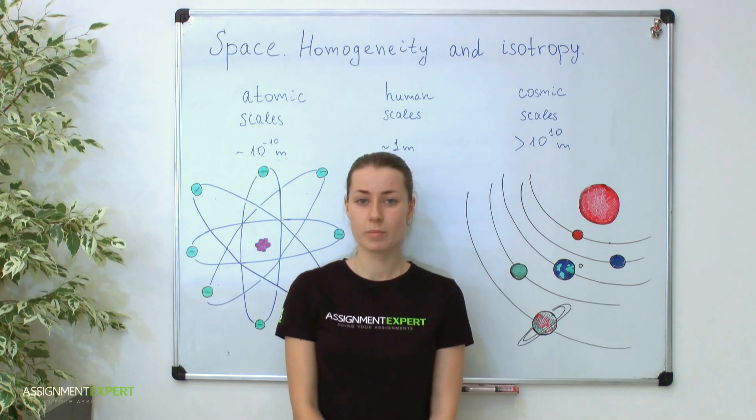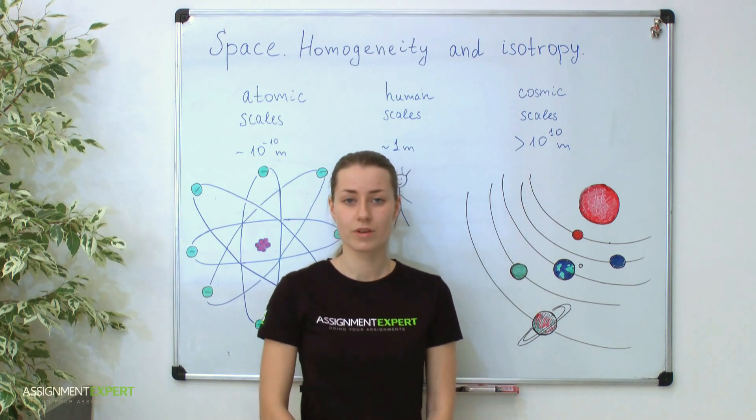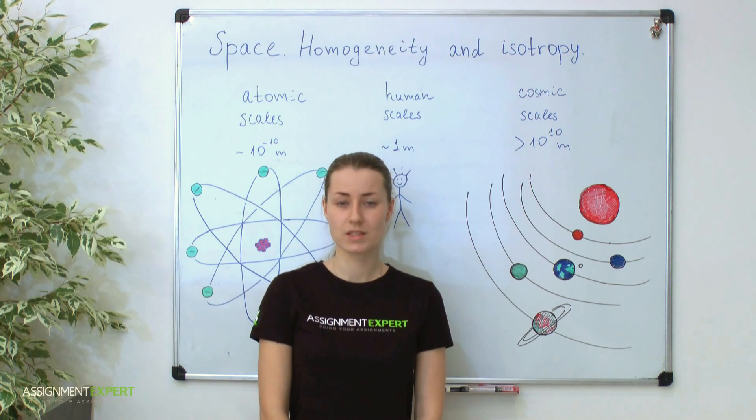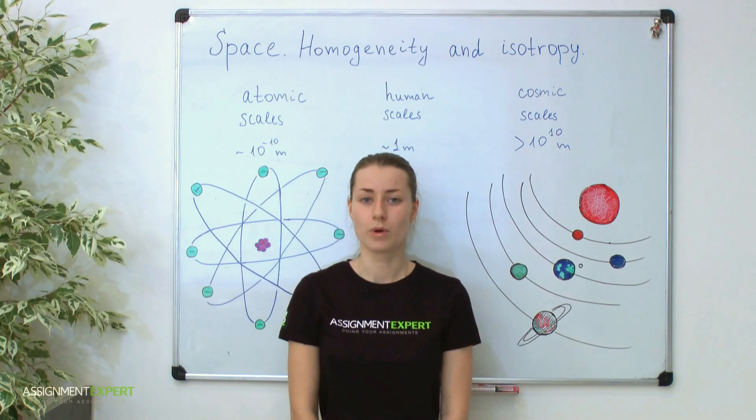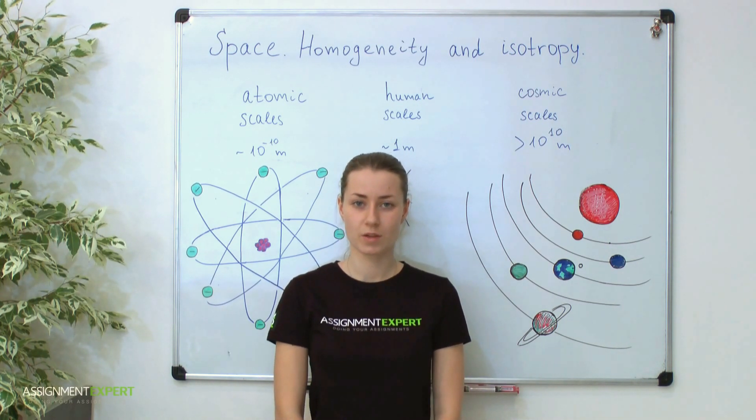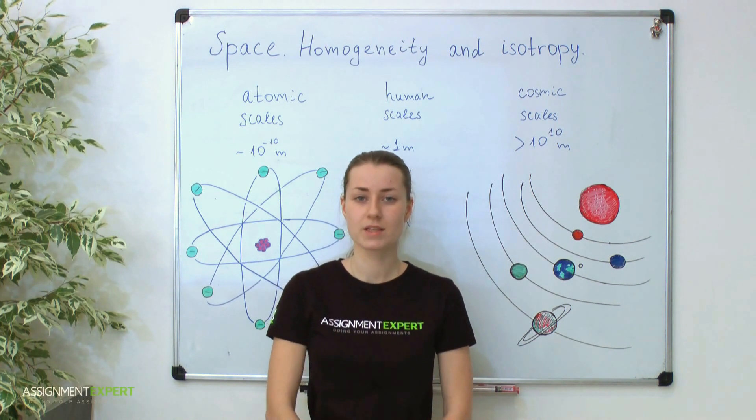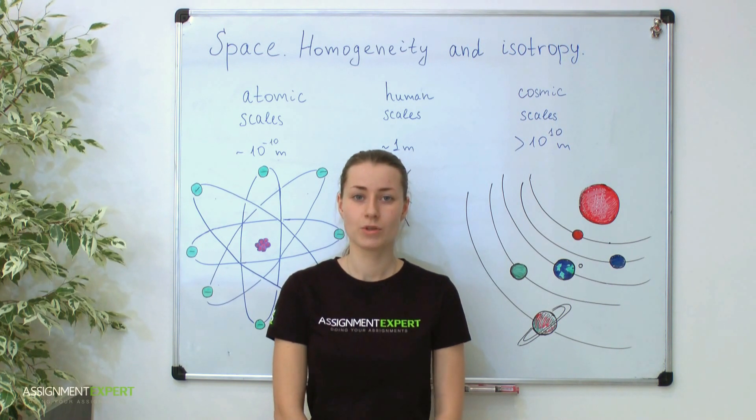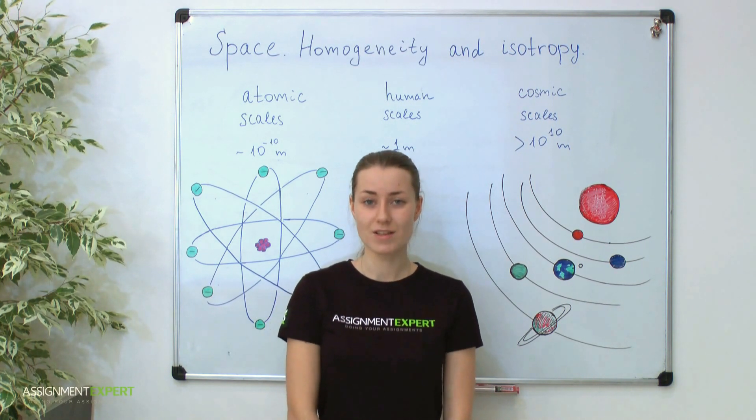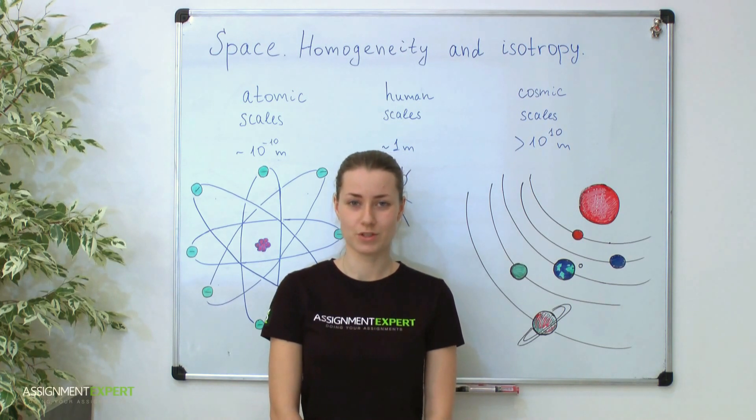Therefore, we can see that at the very big scales, the scales more than our galaxy, cluster of galaxies and so on, you will surprisingly see the identical physical picture everywhere. Such properties of space are called homogeneity and isotropy. Homogeneity means that our space has uniform structure and isotropy excludes any preferred direction.